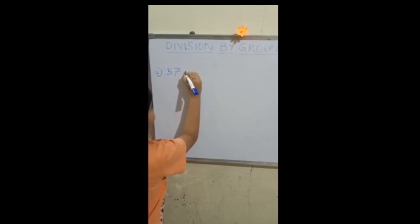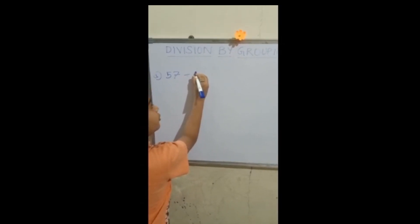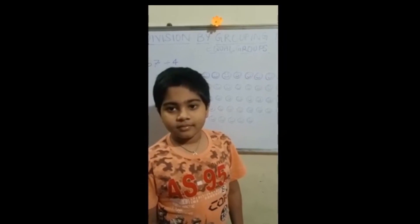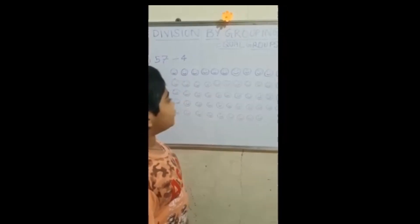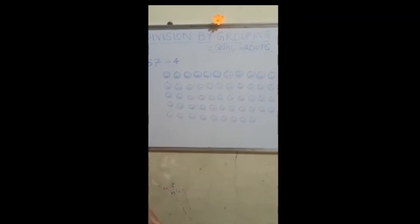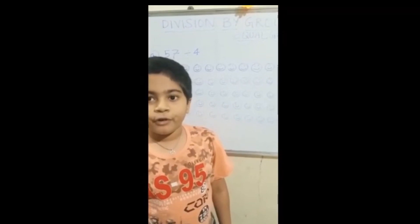Fifty-seven divided by four. Now I have taken fifty-seven smileys. Now equal groups of four.